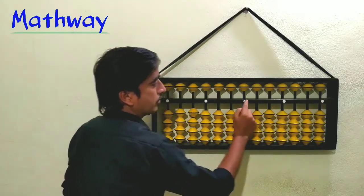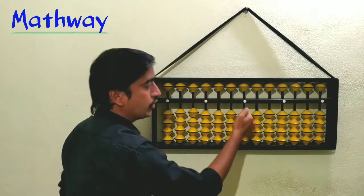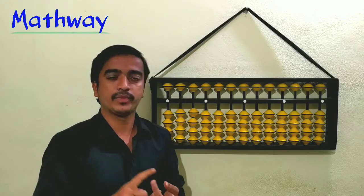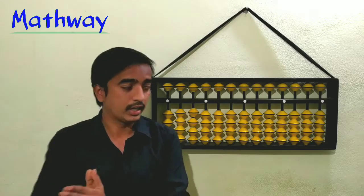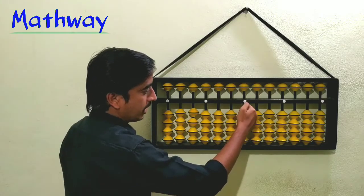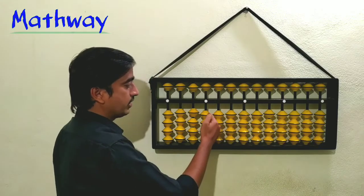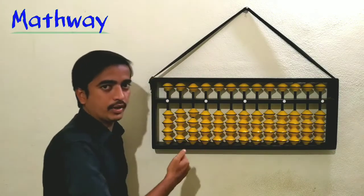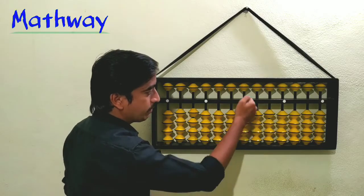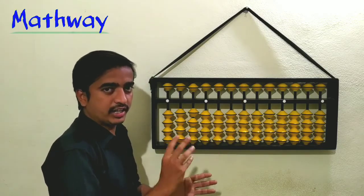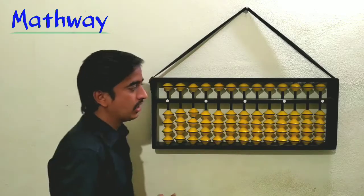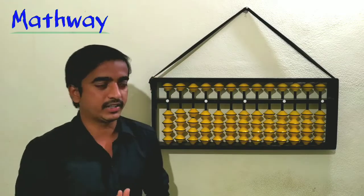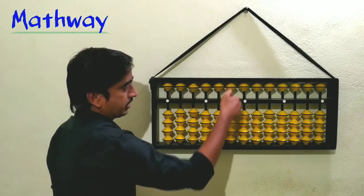Here you can see some dots. We can consider this dot as a units place. The place values of numbers are ones, tens, hundreds, thousands, ten thousands, and so on. We can consider the middle dot as the ones place, then tens, hundreds, thousands in that way. Whenever we consider that middle dot as the ones place, it is very easy to work with decimals as well.